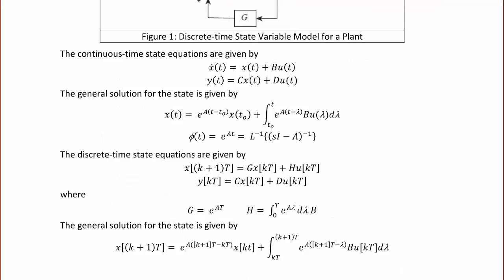The continuous time state equations are given by x-dot of t equals Ax of t plus Bu of t, and y of t equals Cx of t plus Du of t. The general solution for the state is given by x of t equals e to the A(t minus t-naught) times x of t-naught, plus the integral from t-naught to t of e to the A(t minus lambda) times B times u of lambda d-lambda. The solution phi of t equals e to the At, or the inverse Laplace of (sI minus A) inverse.